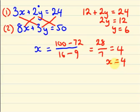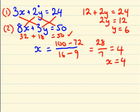I am going to verify by applying these values in my second equation. 8 into 4 is 32, plus 3 into 6 is 18, that equals 50. My answer is correct. That is the end of the session. Thank you.